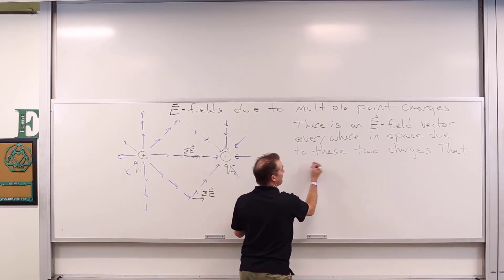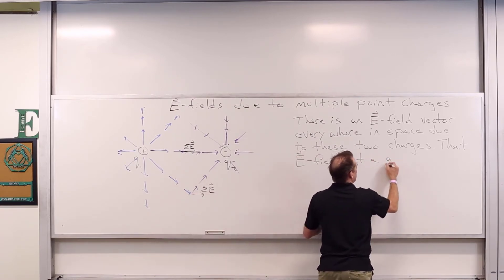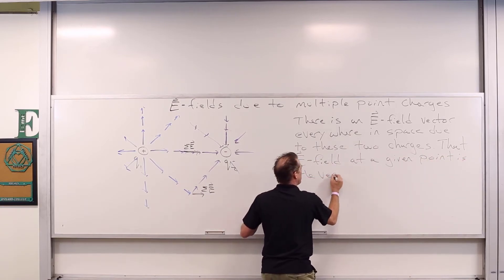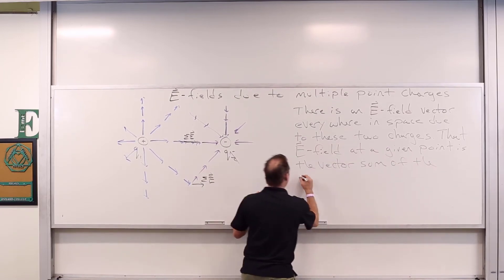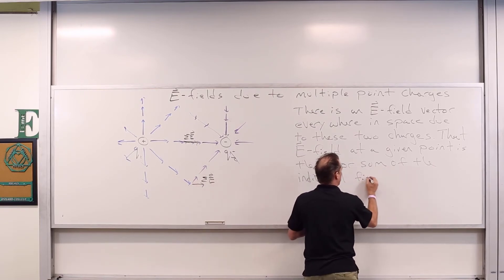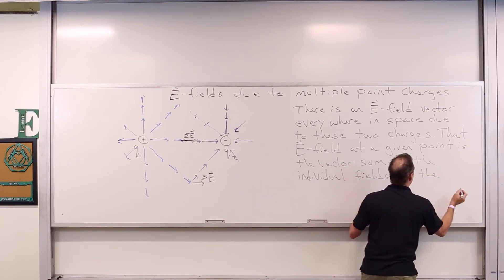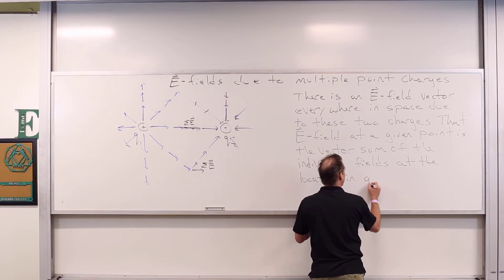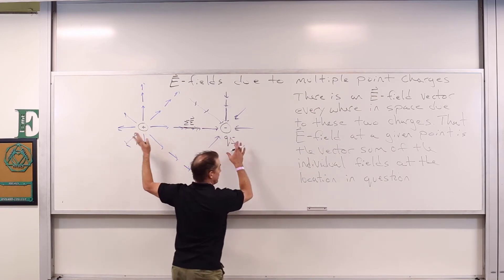There is an electric field everywhere, and that electric field at a given point is the vector sum of the individual fields — individual meaning from each of the individual charges.